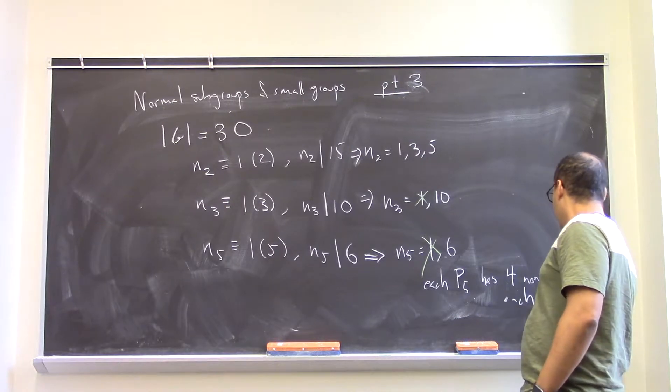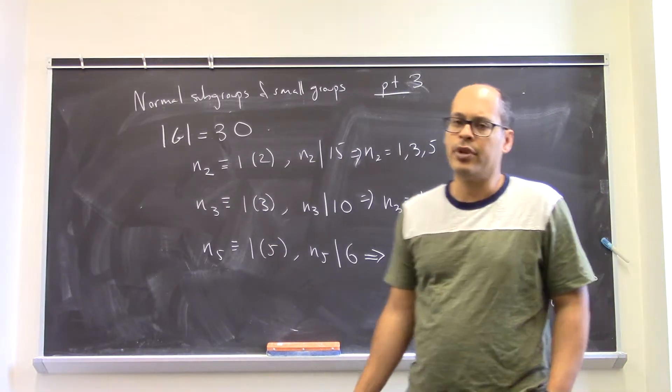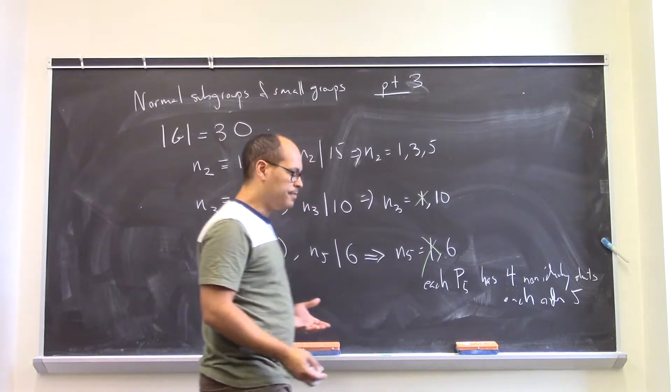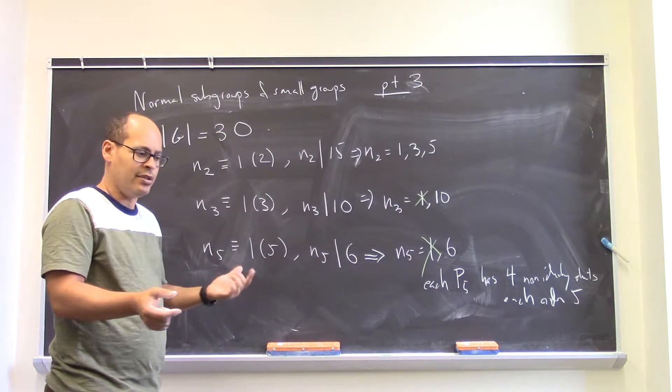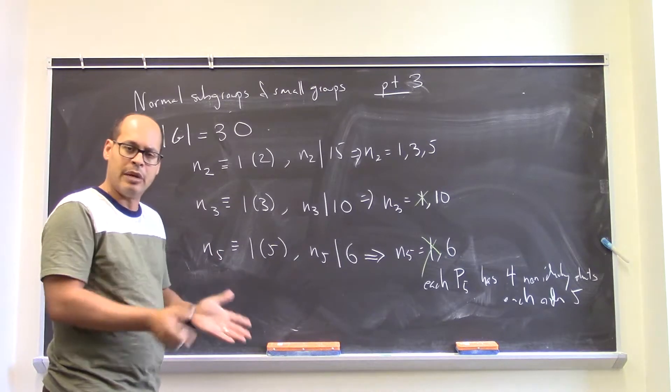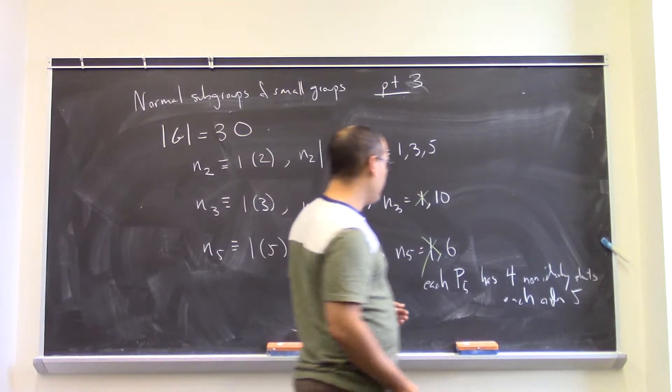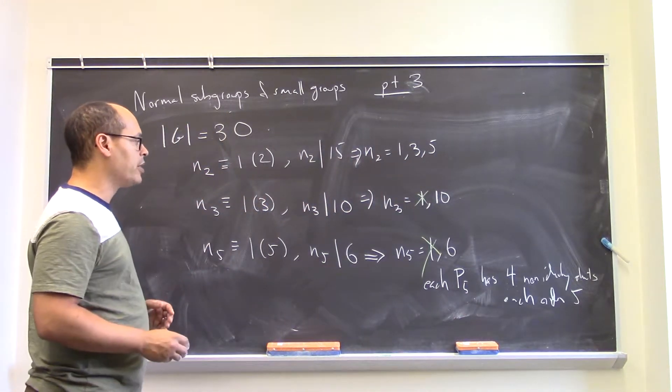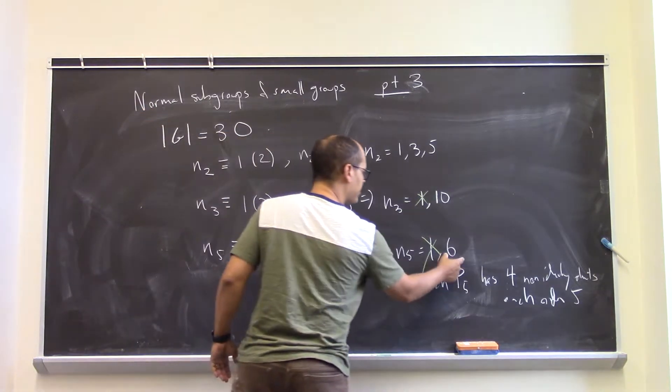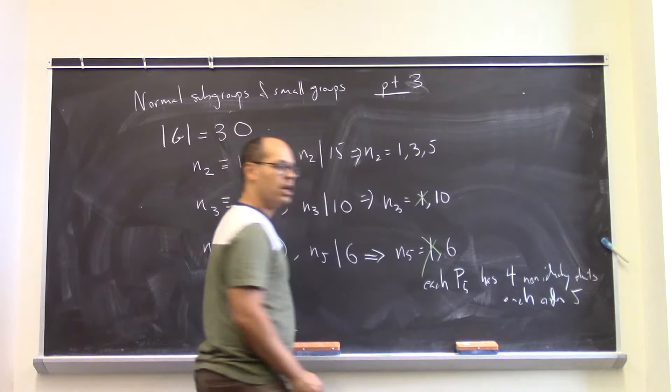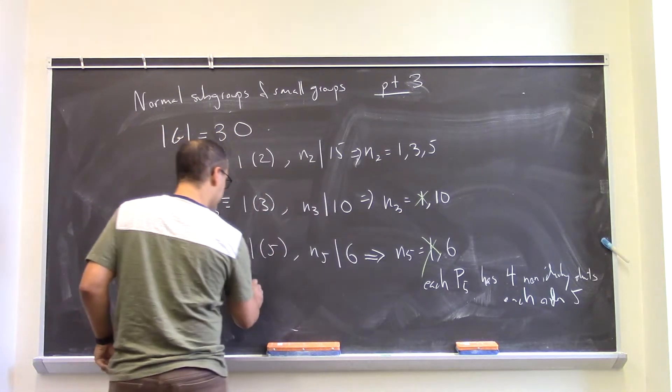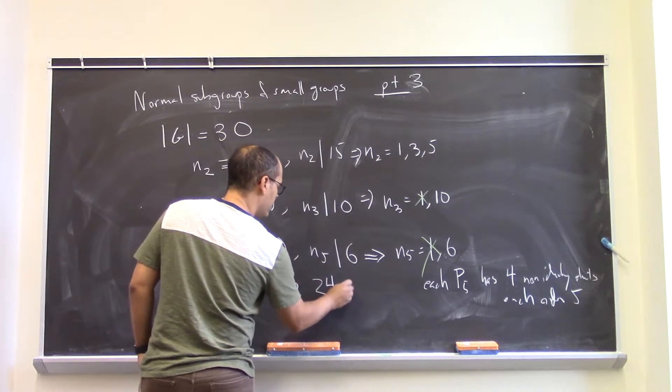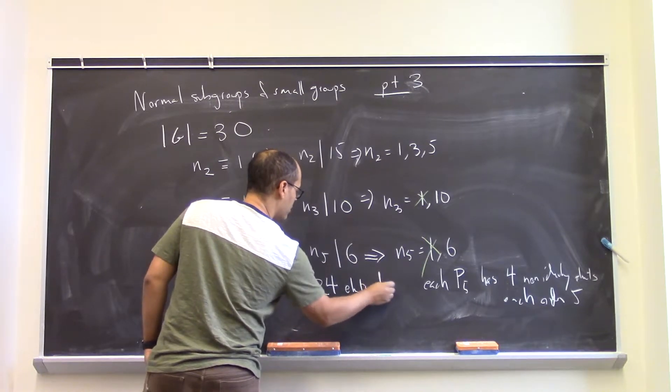Each having order 5. I can say, like, how many elements of order 5 do I have altogether in my group? Well, you know, these different 5-Sylow subgroups don't bump into each other because they're order 5, so they either are the same or they overlap only in the identity. So having 6 distinct subgroups of order 5 means that between these 6 elements, I've accounted for 6 times 4 distinct order 5 elements. So I have 24 elements of order 5.